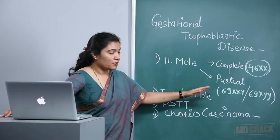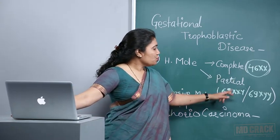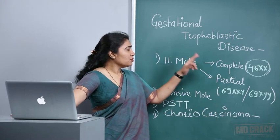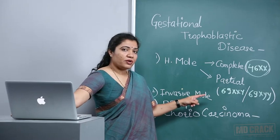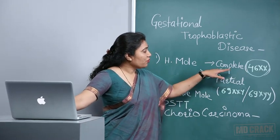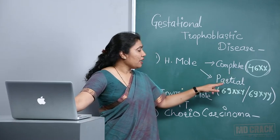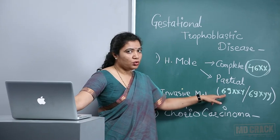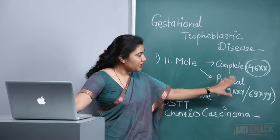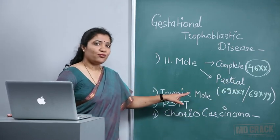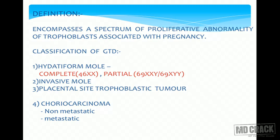The classification includes hydatidiform mole (also called vesicular mole), which can be complete or partial — remember the chromosomal pattern of complete mole is 46XX, and partial mole has triploidy. This is a very important MCQ point. Then there is invasive mole, placental site trophoblastic tumor, and the most malignant variety, choriocarcinoma.